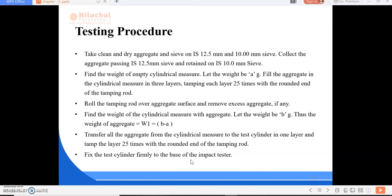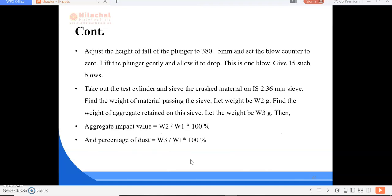Then fix the test cylinder firmly to the base of the impact tester. Adjust the height of fall of the plunger to 380 plus or minus 5 mm and set the blow counter to zero. Lift the plunger gently and allow it to drop. This is one blow. Give 15 such blows.